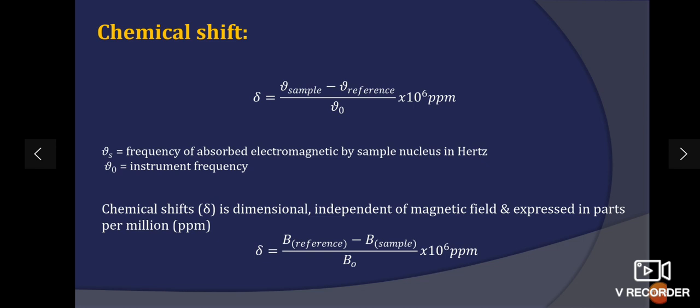The chemical shift is usually represented using del scale and in older methods it was expressed in dow scale. Nowadays we are using del scale chemical shift values. Nu sample is frequency of the sample and nu reference is the frequency of tetramethyl silane, that is the standard substance we are taking as reference. Nu 0 is instrument frequency.